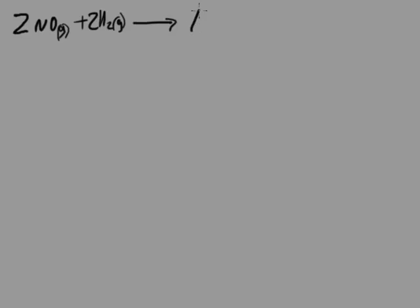This video is a solution to the 1994 Part B, Question 2, which is a kinetics problem. It starts out by giving us the equation: 2NO(g) reacts with 2H₂(g) to form N₂(g) and 2H₂O(g). Experiments are conducted to study the rate of reaction, and initial concentrations and rates are given in the table, showing 4 experiments with initial concentrations of NO, H₂, and the initial rate of formation of N₂.